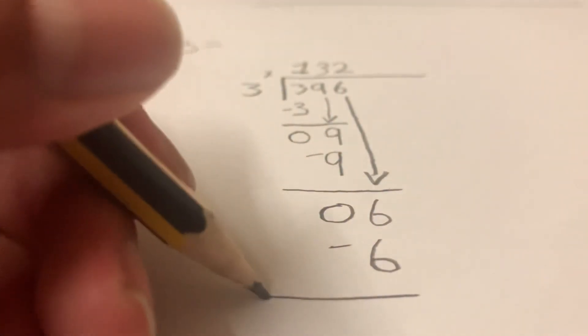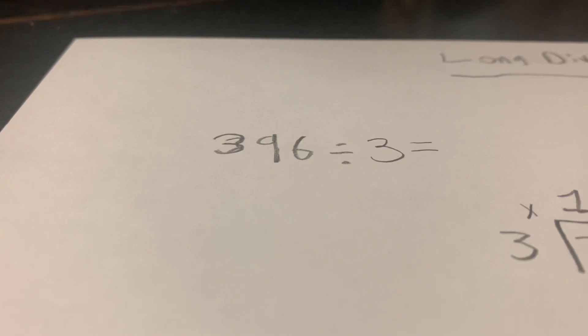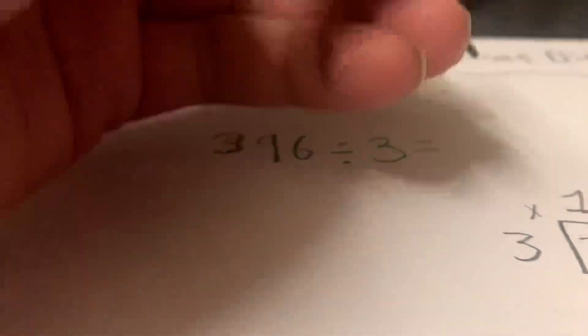And you're going to subtract six, take away six, which equals zero. So the answer to 396 divided by 3 is 132.